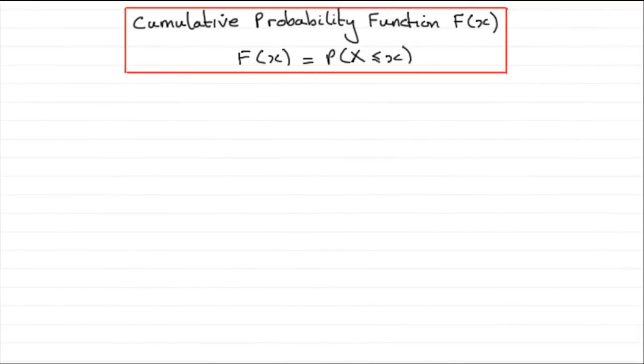Hi, welcome to this tutorial on the cumulative probability function f of x. This is a capital F, f of x. And it's defined as f of x equals the probability that x is less than or equal to x.